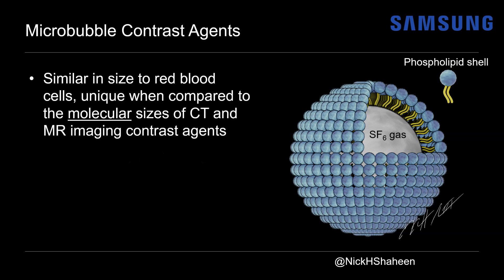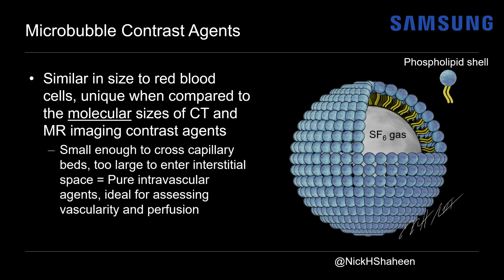These contrast agents are similar in size to red blood cells, which is unique compared to the smaller molecular sizes of the contrast agents used in CT and MRI. That means these are small enough to cross capillary beds but too large to enter the interstitium, making them pure intravascular agents, ideal for assessing vascularity and perfusion.